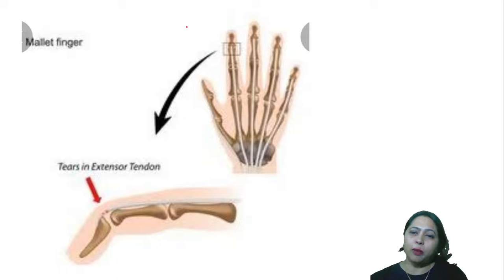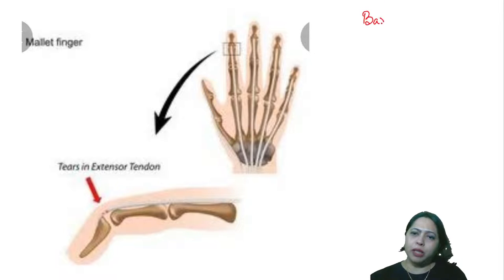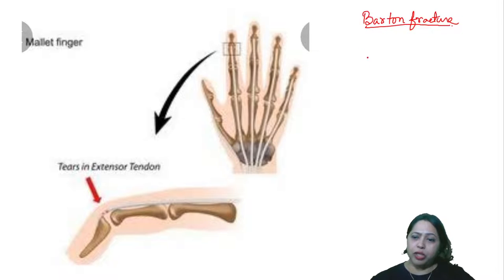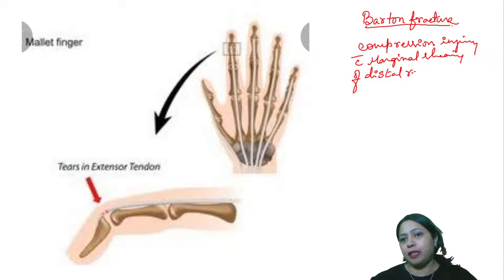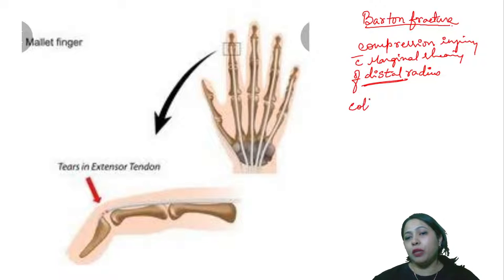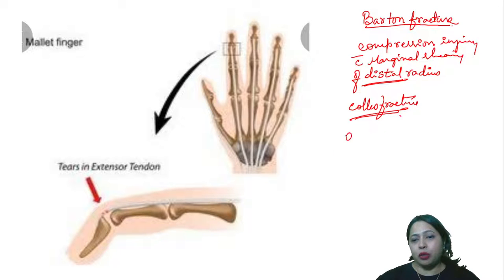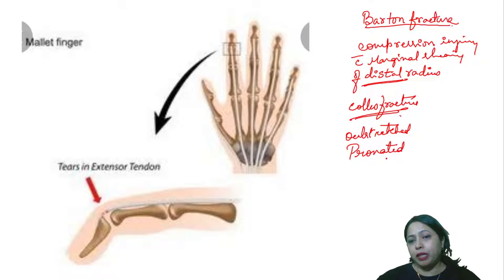Barton's fracture is a compression injury with marginal shearing of the distal part of the radius. It looks similar to Colles' fracture but remember it is a compression injury. The fall is on the outstretched hand with the wrist pronated.